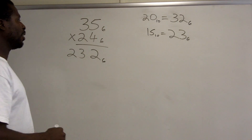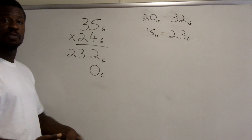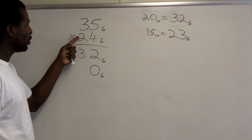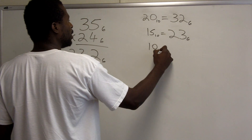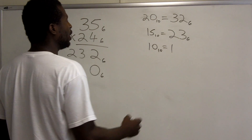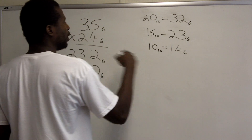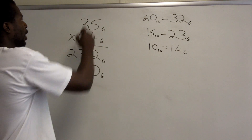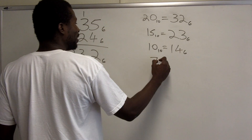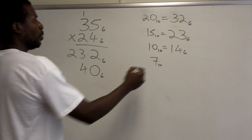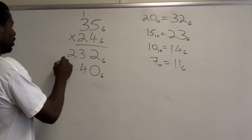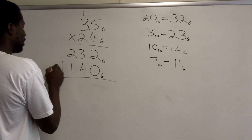Now I move on to distribute the 2. I add a 0 for the place value, just like in base 10 multiplication. Then 2 times 5 is 10 base 10. How many groups of 6 in 10? One group, with 4 remaining — so 10 base 10 is 14 base 6. I record 4 and carry 1. Then 2 times 3 is 6, plus 1 carried is 7 base 10. There is one group of 6 in 7 with remainder 1, so 7 base 10 is 11 base 6. I record both 1s.